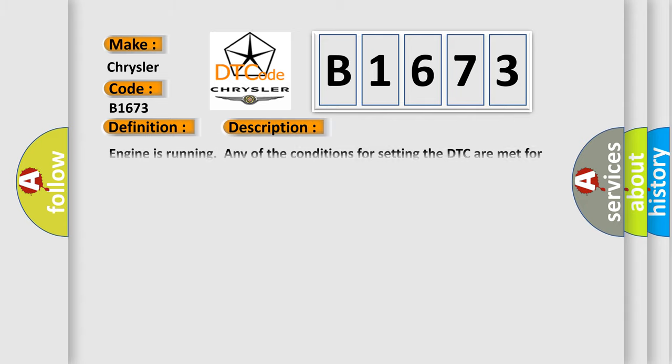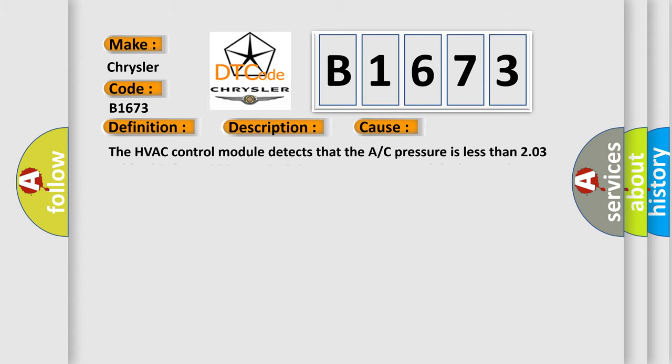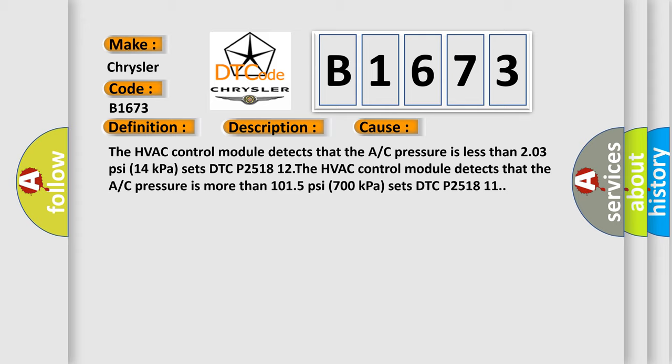Here is a short description of this DTC code. The engine is running and any of the conditions for setting the DTC are met for 15 seconds. This diagnostic error occurs most often when the HVAC control module detects that the A/C pressure is less than 203 PSI (14 kilopascals), setting DTC P251812.